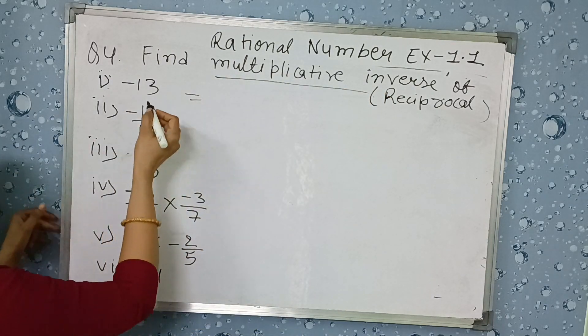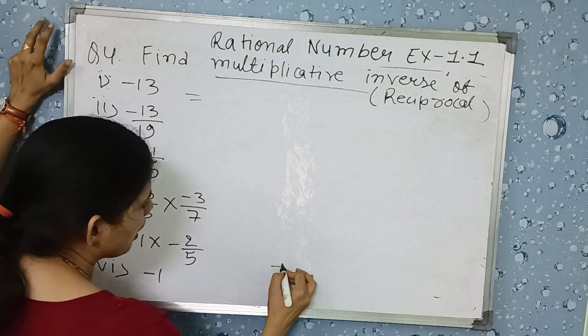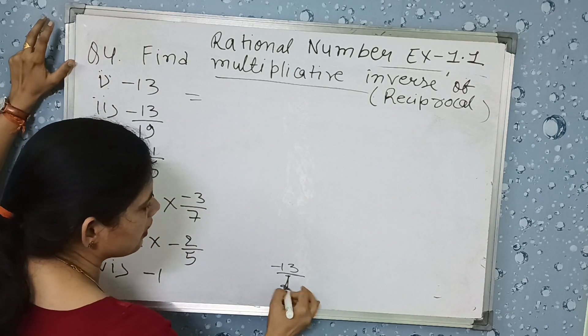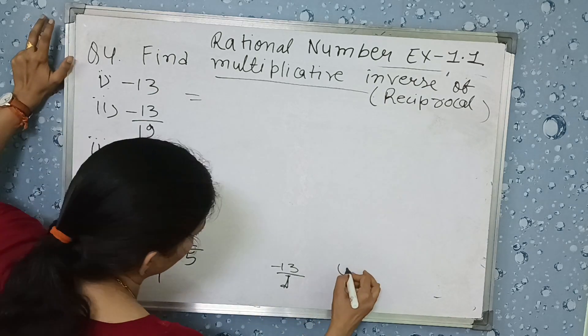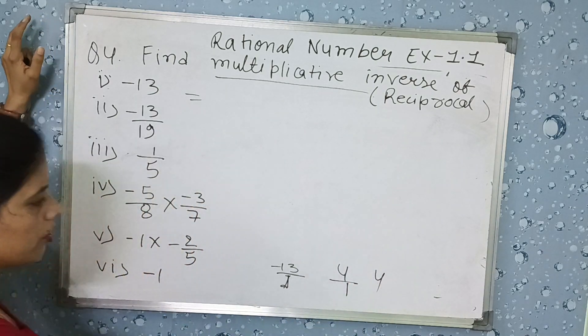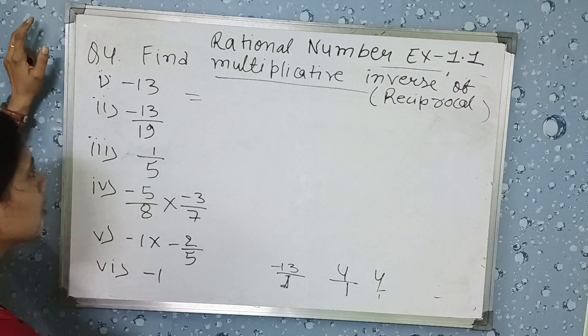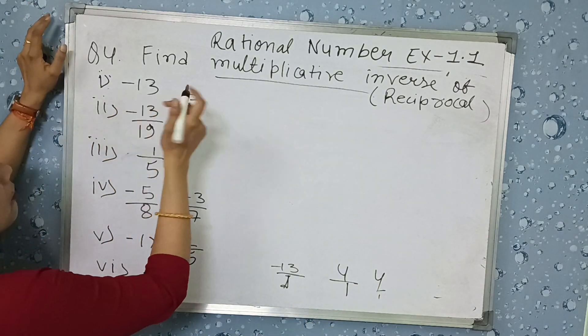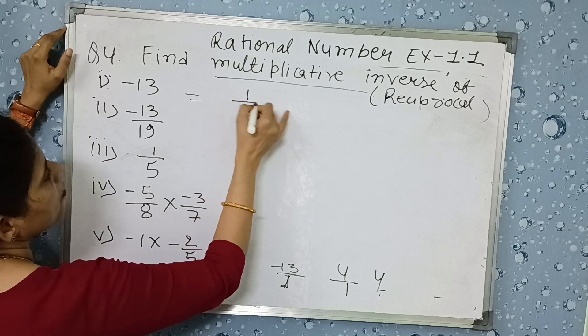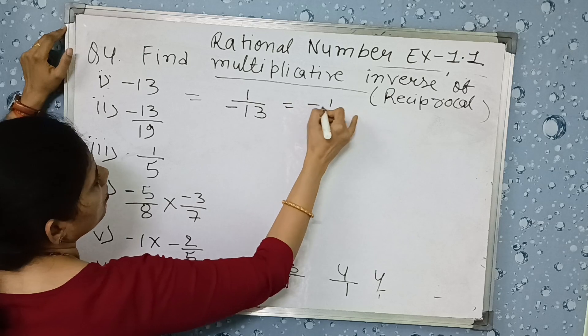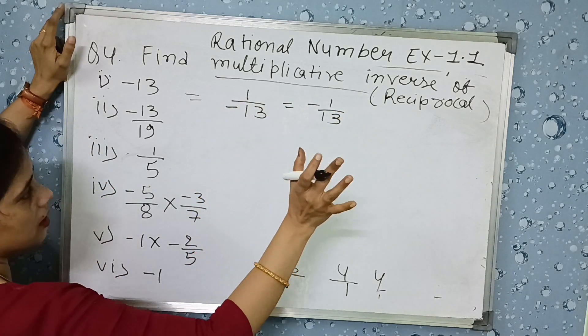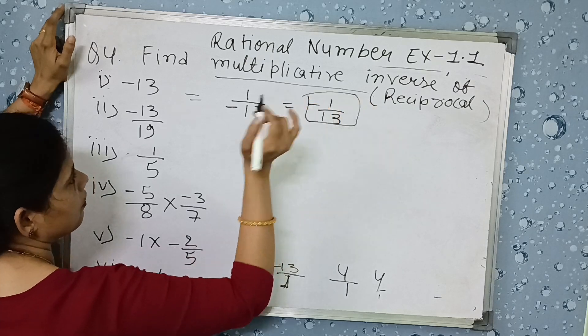So if it is minus 13, it is by default minus 13 by 1, because we never write generally 1 as denominator. You know that 4 also we write as 4, not 4 by 1, no need. By default it is 4. We know that minus 13 by 1. Means its opposite, what will it become? 1 by minus 13, or you can write minus 1 by 13, same thing. Minus can be put on top or bottom, but this is the standard form.